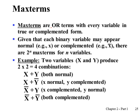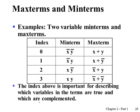Similarly, maxterm is defined, but maxterm is an OR term, with every variable present either in true or complemented form. For example, if we have two variables X and Y, X and Y appear either in true or complemented form, but it's an OR term. So we have four combinations: X and Y in true form, one of them in complemented form, or both variables in complemented form. That is called the maxterm.